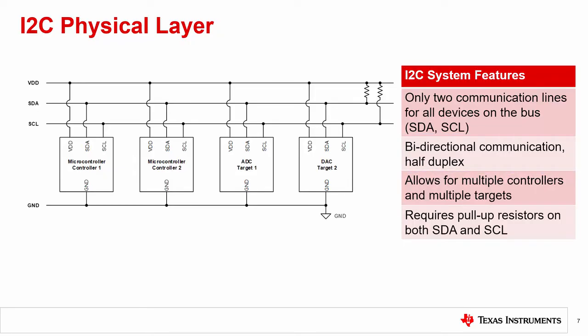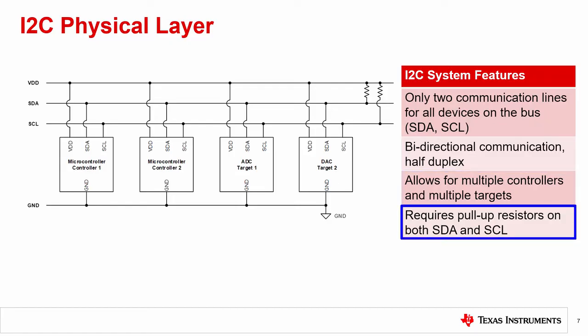For example, the controller device can send configuration data to the target device, and the target device can send conversion data back to the controller device. Communication is half duplex, where only a controller or a target device is sending data on the bus at a time. An I2C controller device starts and stops communication, which removes the potential problem of bus contention. Also, communication with the target device is sent through a unique address on the bus. This allows for both multiple controller and multiple target devices on the I2C bus.